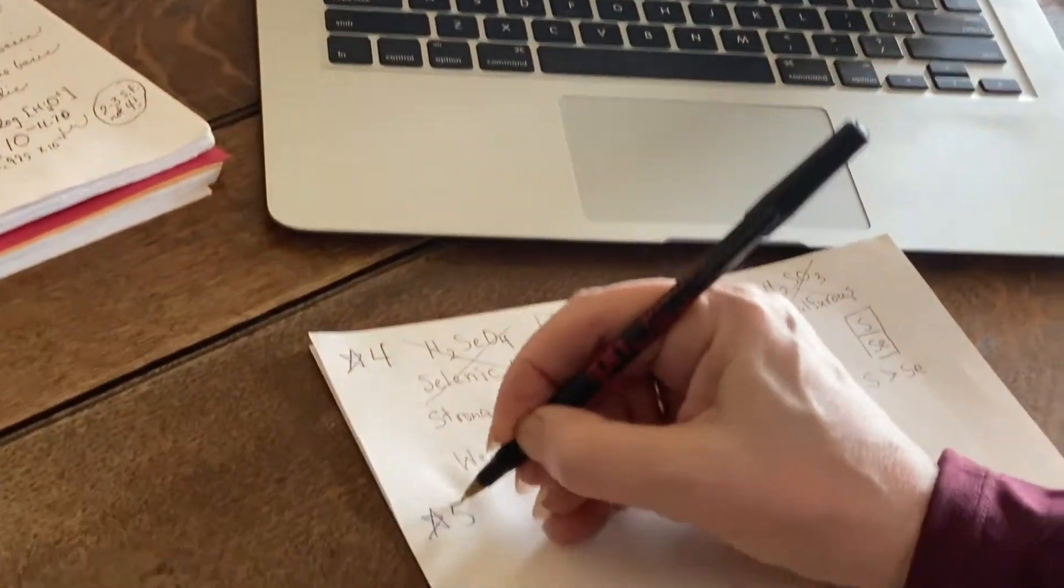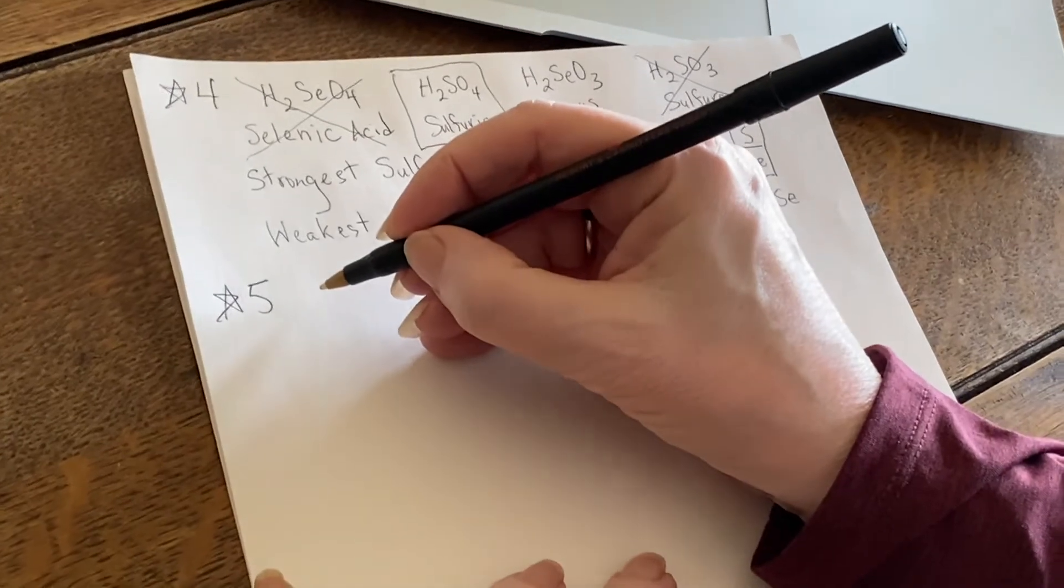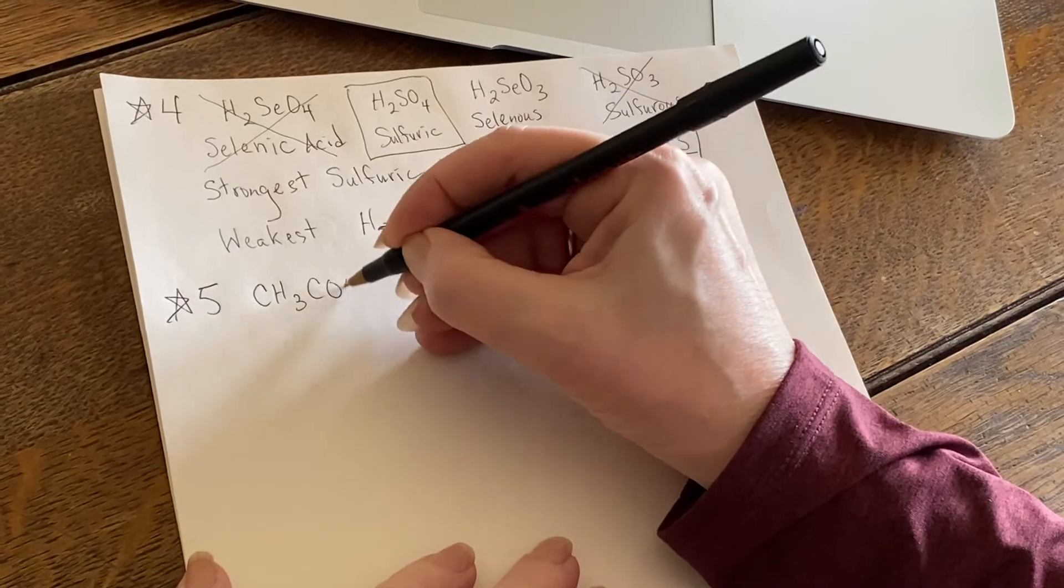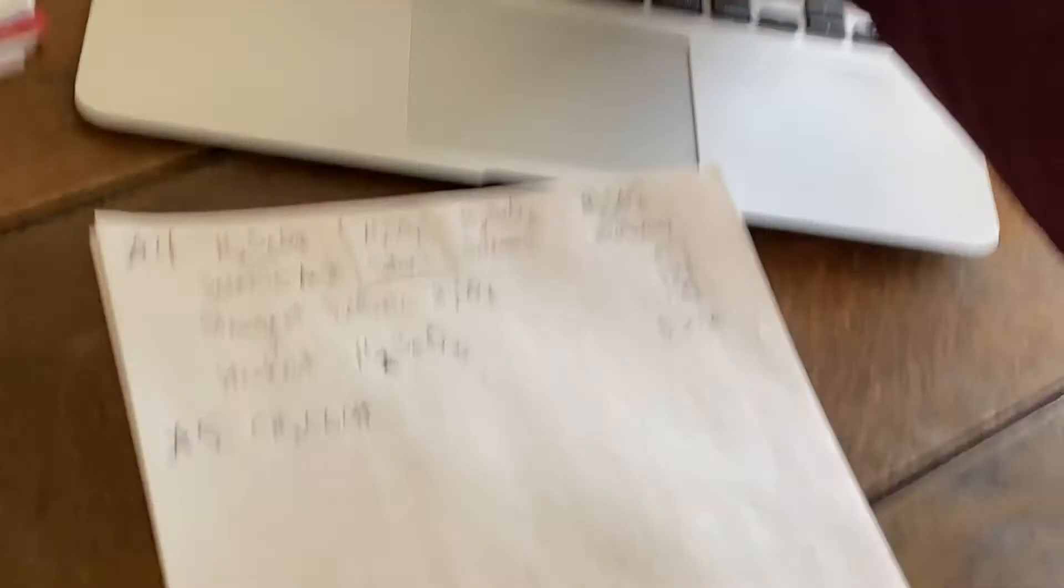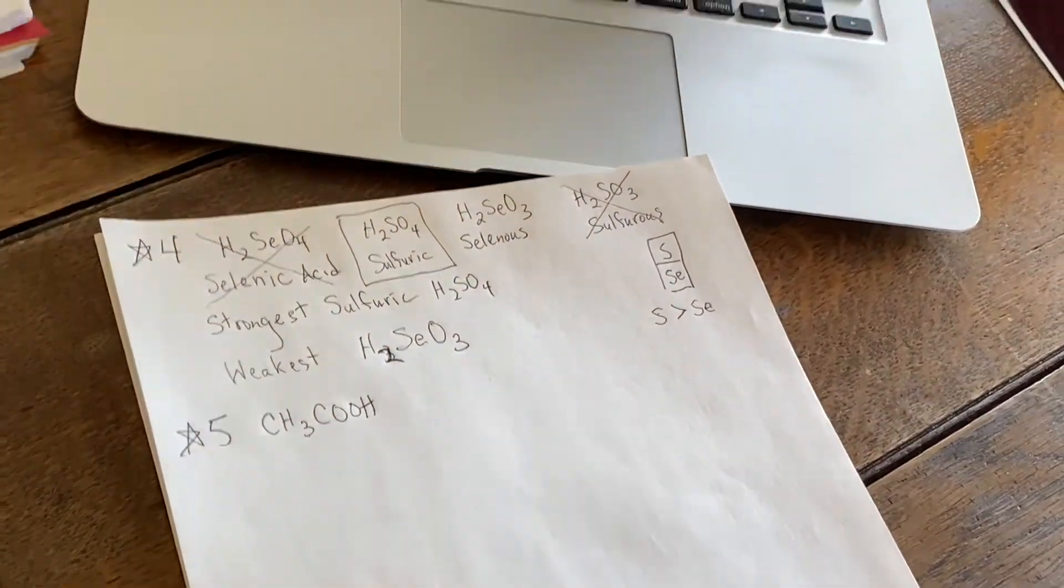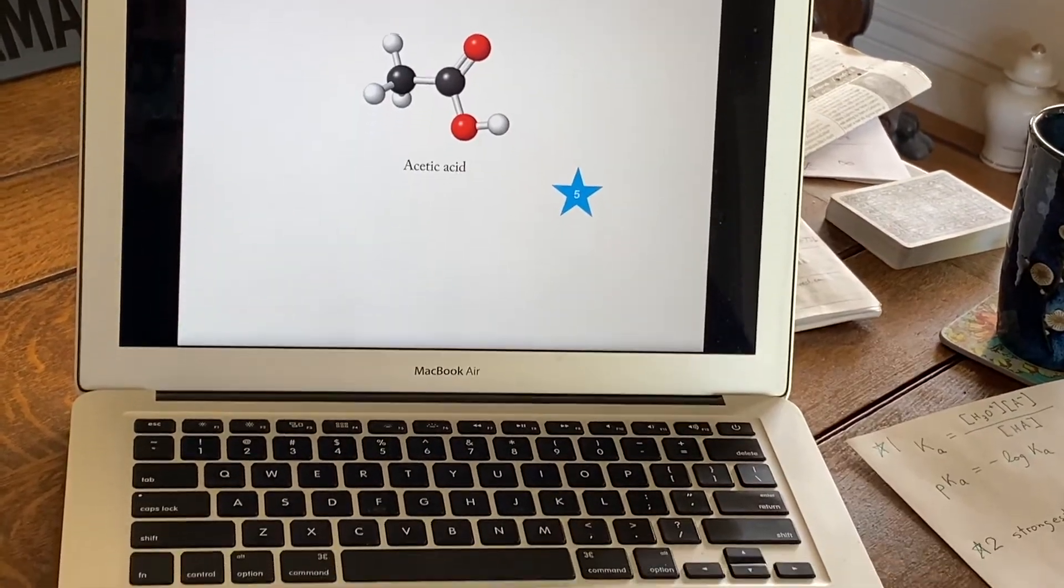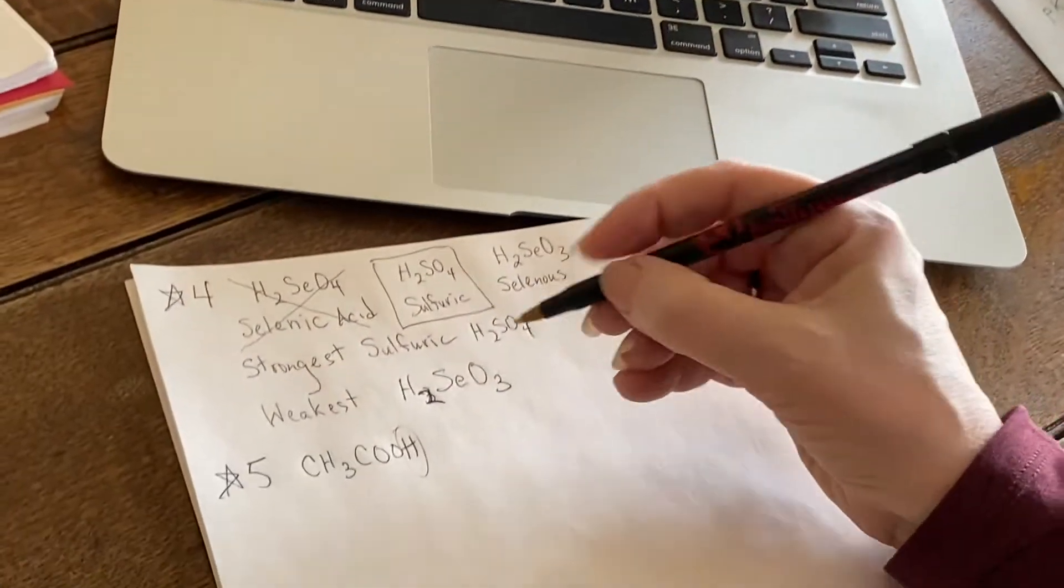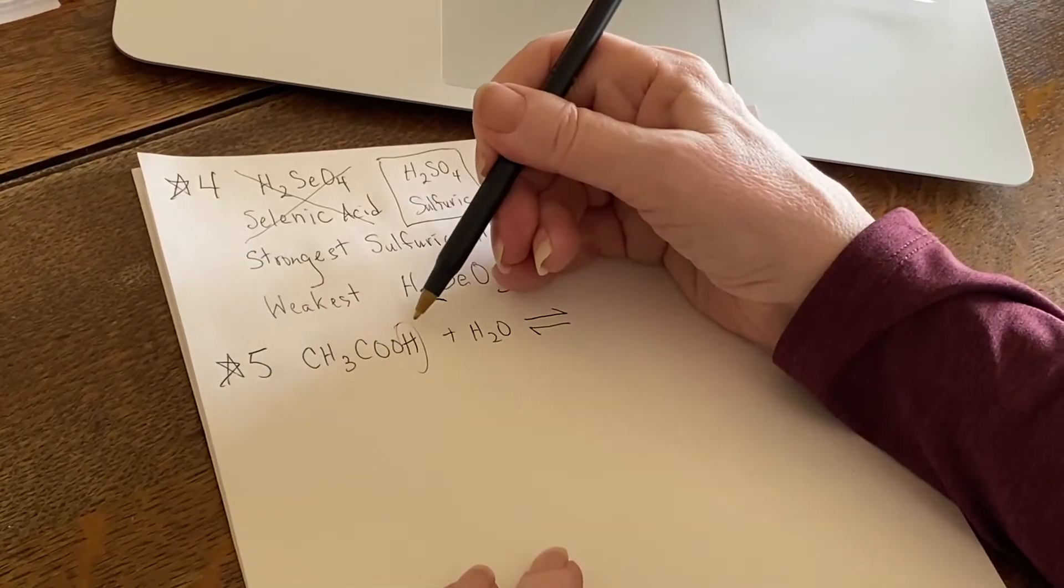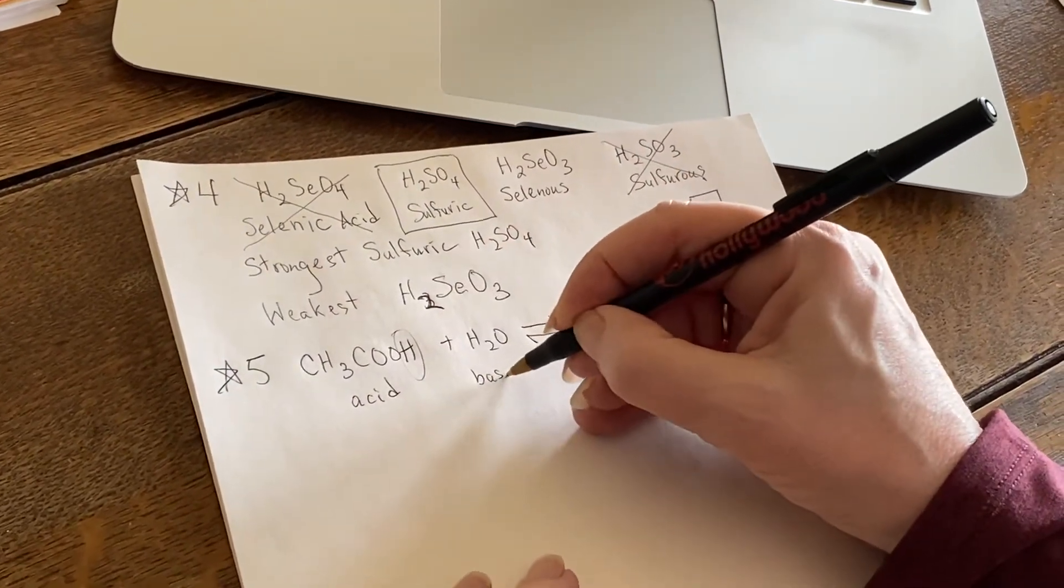So, star five, we have acetic acid. I might write this in more than one way. Let me write it the way it looks right now. Here's CH3COOH. I can see those units right there. So if it's going to act as an acid, it's this hydrogen that gets away. We're putting it in water. We've already identified that this is what is getting away. So clearly this is the acid and that forces the water to be acting as a base.